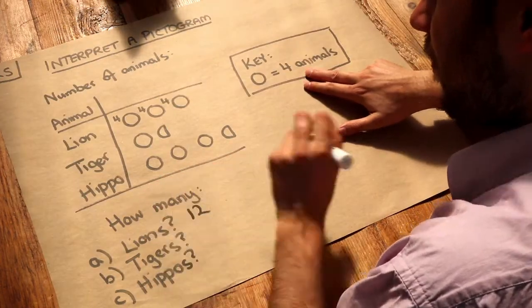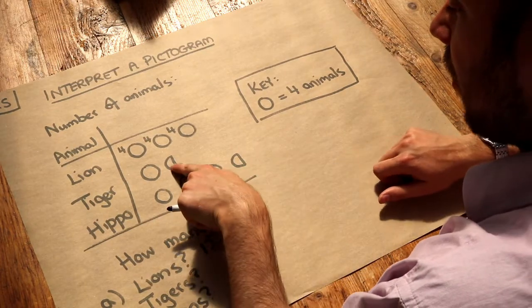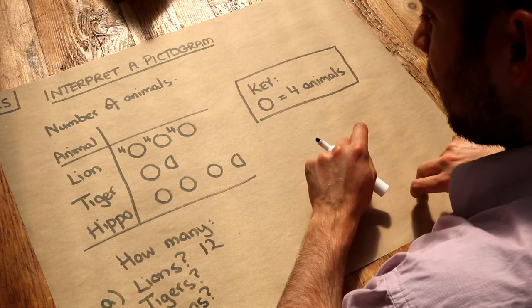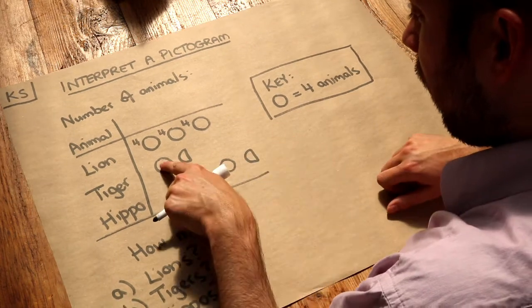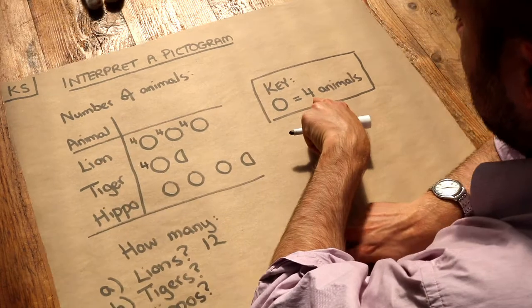So we've got twelve lions, and then tigers. Now this is a bit more complicated because we seem to have a fraction of one of these circles. Let's look - we've got four tigers here because we've got a full circle that represents four animals.